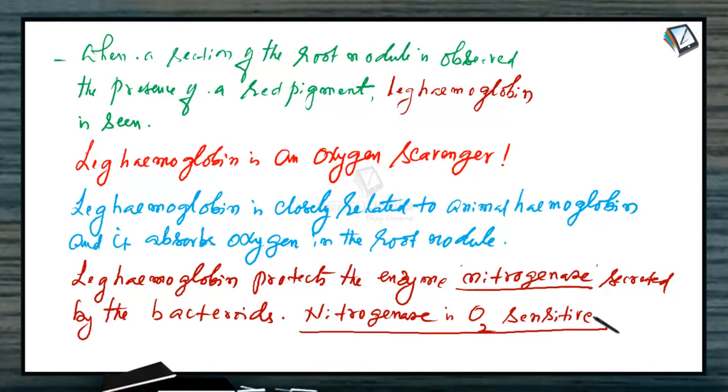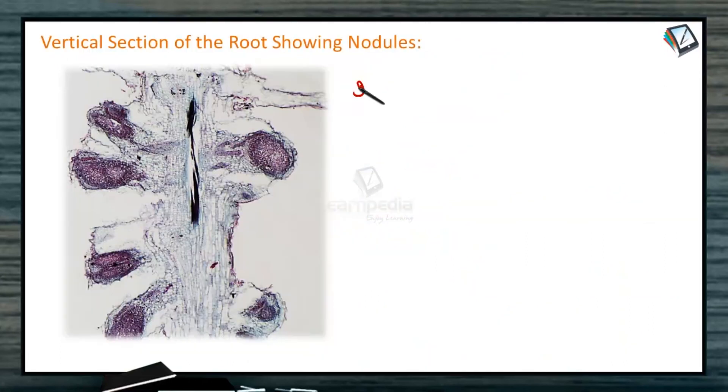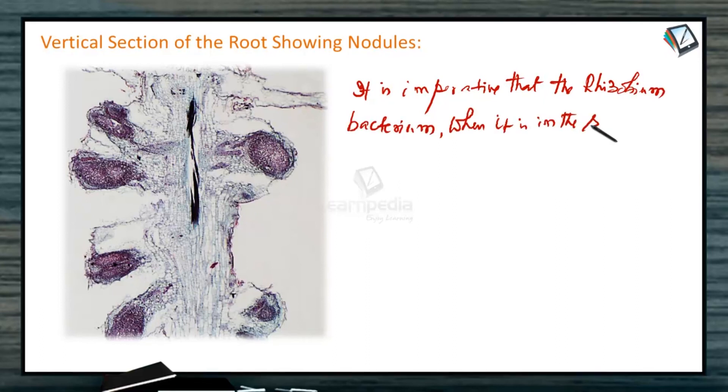As we have already discussed, in the presence of oxygen, the nitrogenase enzyme is deactivated. So nitrogenase enzyme functions only under anaerobic conditions. It is imperative that the rhizobium bacterium, when it is in the soil, is aerobic. Means survives in the presence of oxygen.